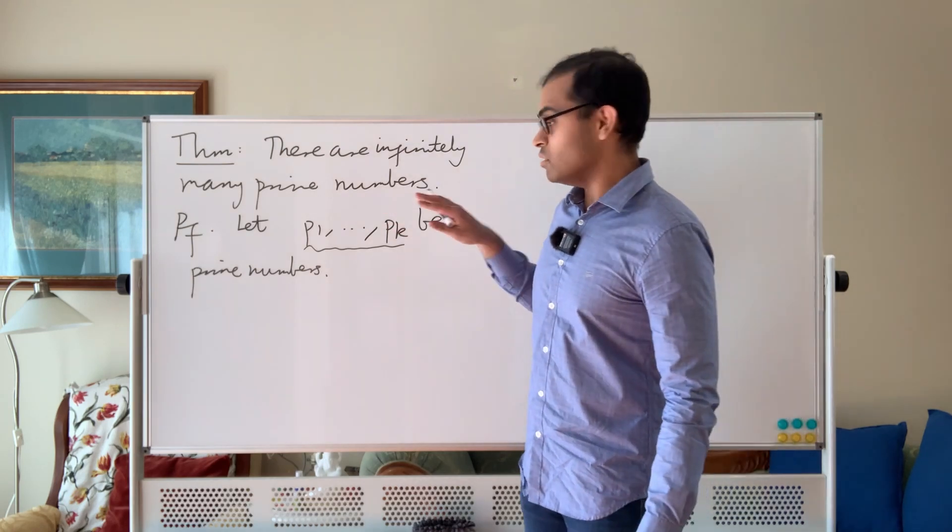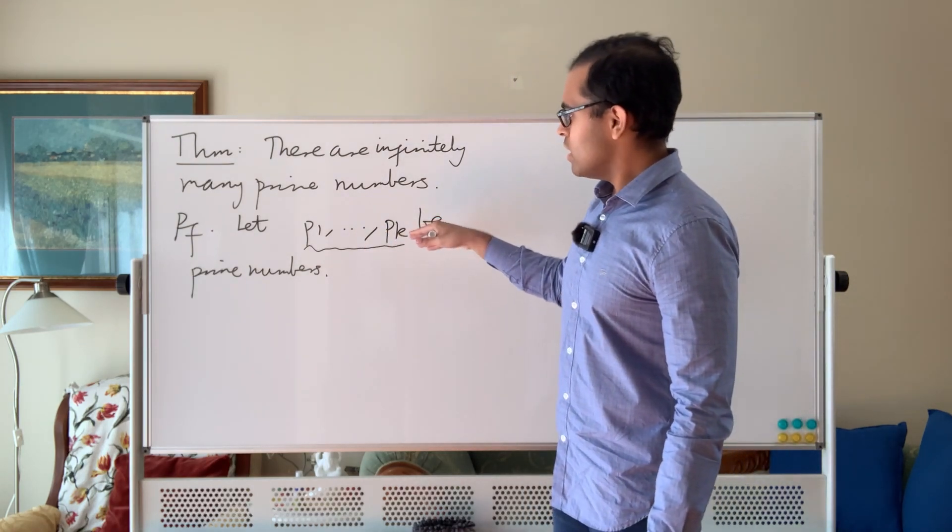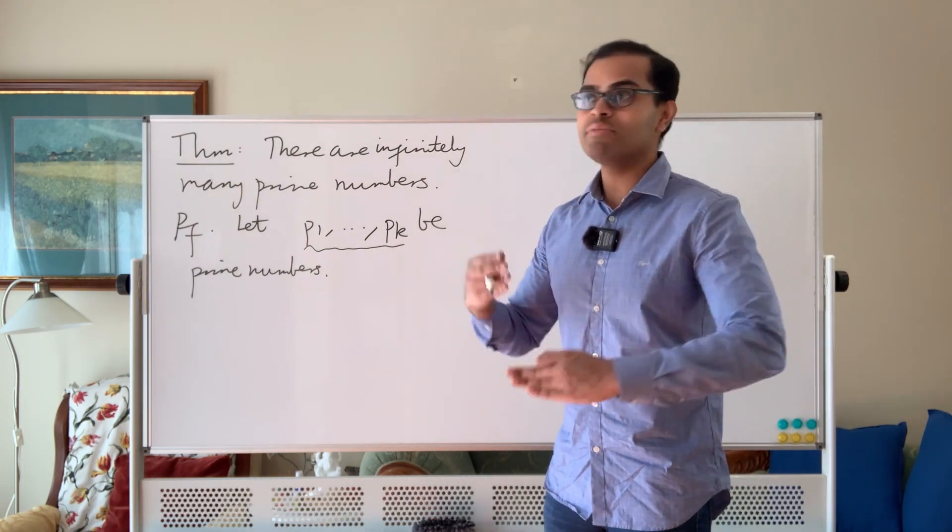So whatever list that you give Euclid, Euclid will find a prime that's not in the list, and that shows that there is no list of primes, so the primes just go on forever.